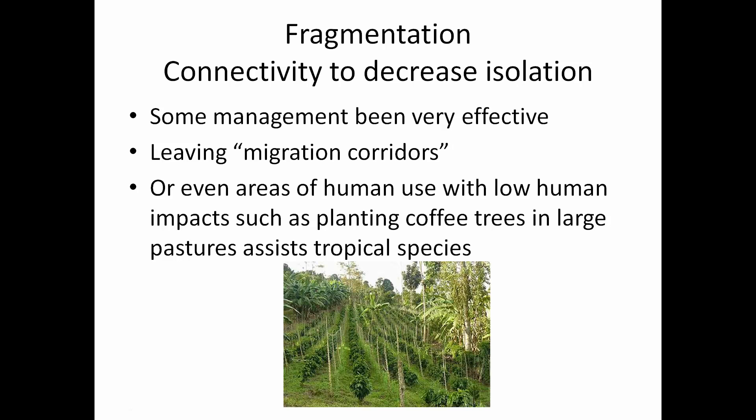Some management has been very effective, especially in the tropics, to address connectivity problems. Leaving migration corridors as shown earlier is one approach. Even areas of human use with low human impact — such as planting coffee trees — have been very successful in allowing birds, some mammals, and even some reptiles to move between tropical patches.